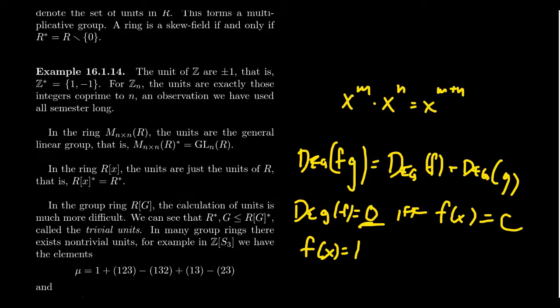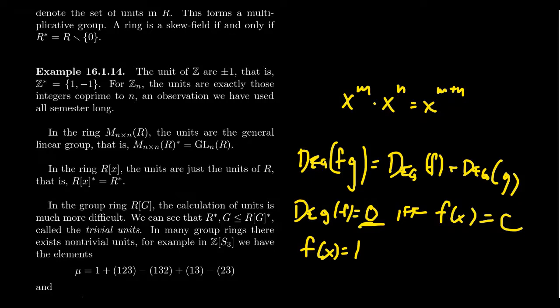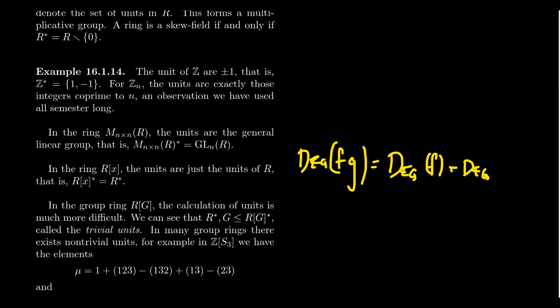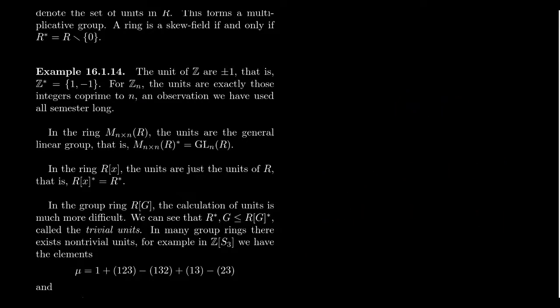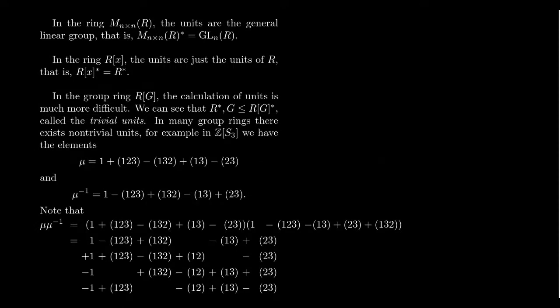A constant polynomial is essentially just an element of the coefficient ring, in which case it has to be a unit of that ring. So polynomials don't offer anything new — some of these rings with their unit groups are groups we already know well, and polynomial rings are easy to describe. The last example I want to discuss regarding units is more complicated: units inside a group ring.